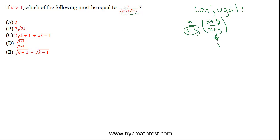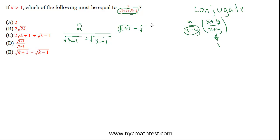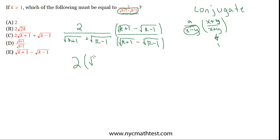So what is the conjugate of this denominator? It's the exact same binomial, except with a minus sign in between. So let's rewrite the problem: we have the square root of k plus 1 plus the square root of k minus 1, and we multiply by the conjugate — which is the square root of k plus 1 minus the square root of k minus 1 — over that exact same thing. In the numerator we have 2 times the quantity square root of k plus 1 minus square root of k minus 1, leaving the 2 outside without distributing it inside.